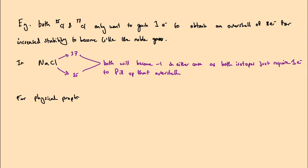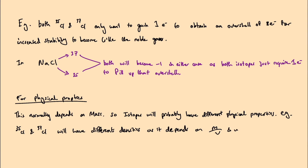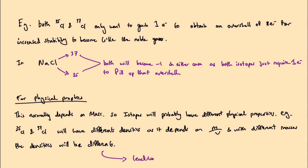Finally, coming to the physical properties of isotopes: these normally depend on mass, and therefore the physical properties of isotopes may be slightly different due to the different mass numbers each isotope has. For example, density is a physical property with the formula density equals mass divided by volume. Because the mass numbers of isotopes are different, the densities of these isotopes will be slightly different, leading to slightly different physical properties between the isotopes.